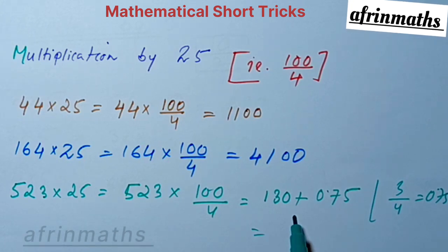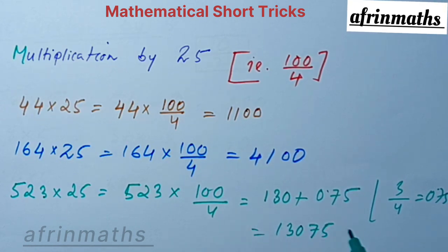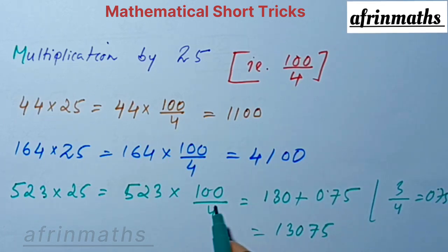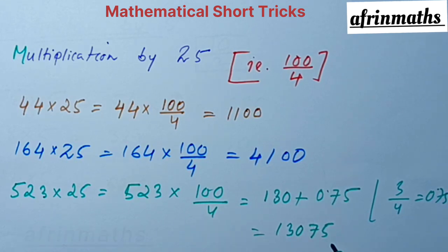By adding this value, we have 130.75. Since we have decimal point after 2 digits, we remove this decimal point to get 13075.